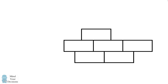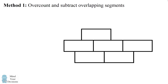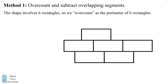It at first seems like there is not enough information to solve this problem because the rectangles overlap in odd places. But in this video I will present two ways you can solve this problem. The first is to over count the perimeter and then subtract out the overlapping segments. The shape consists of six rectangles, so we could over count as the perimeter of six rectangles. We then need to subtract out the overlapping segments.